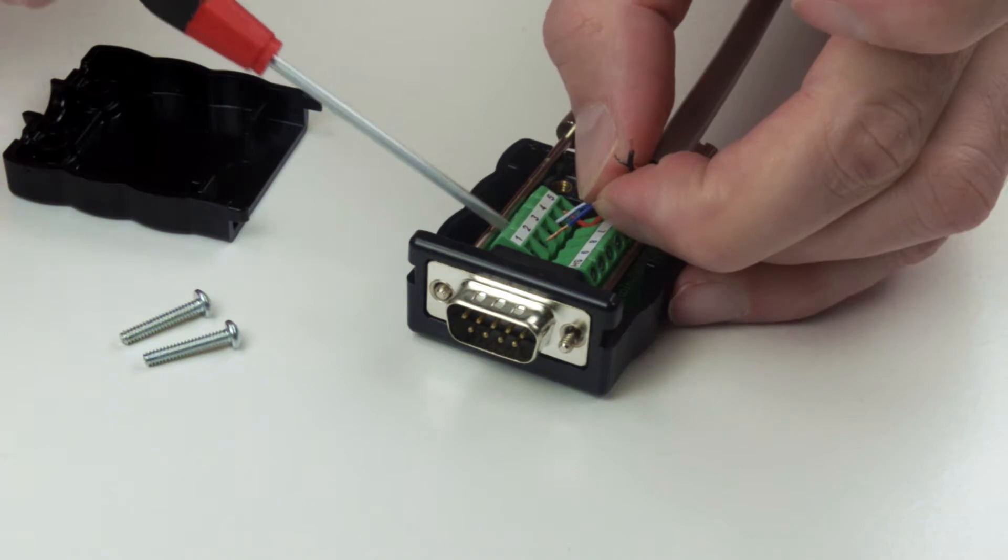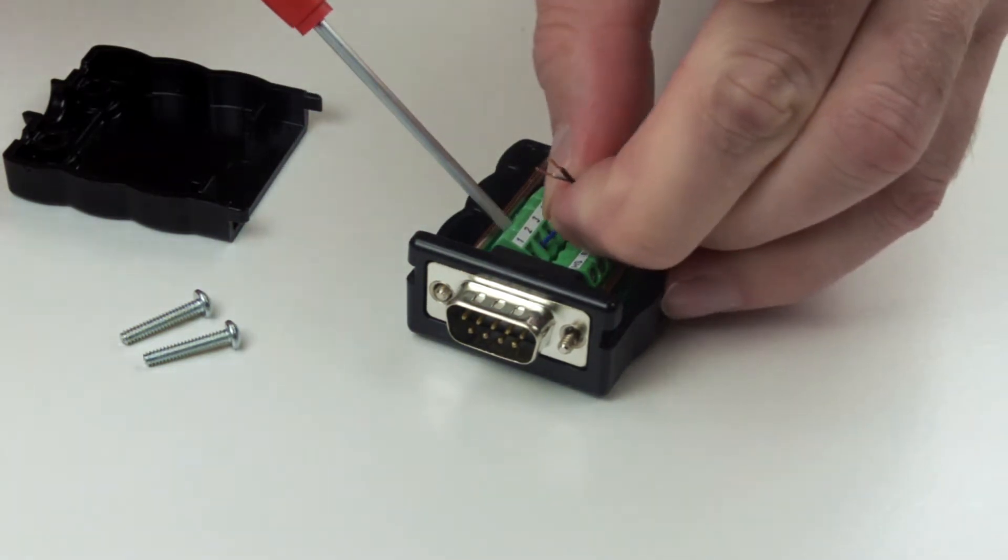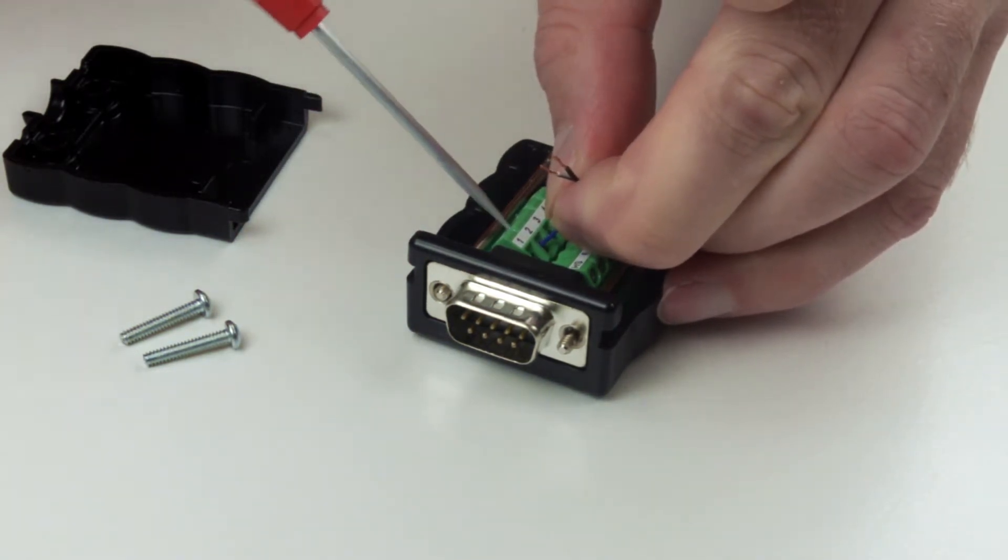For screw terminals, loosen the screw on the top of the terminal block, insert the wire, and tighten the screw.